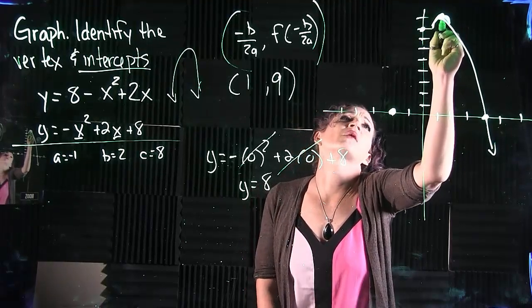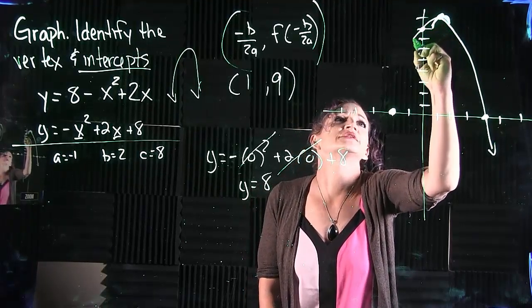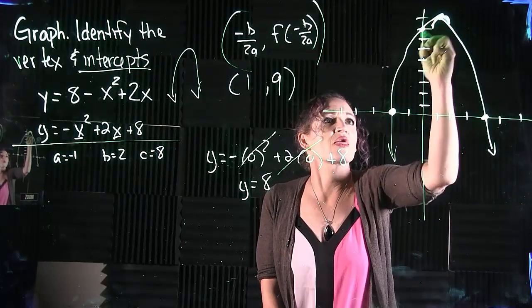So that means we now know from our vertex it's going to hit this point and hit our x-intercept down there. And that is what our graph looks like for this example.